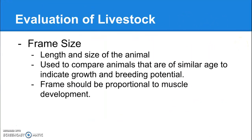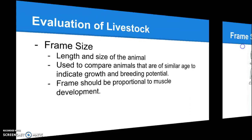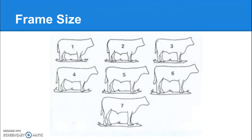Frame size is the length and size of the animal — how big is its skeleton. This is used to compare different animals of similar age and helps indicate growth and breeding potential. You want the frame to be proportional to muscle development; a huge frame with very little muscle means a big skeleton but not much meat. Frame size is scored on a scale of one to seven, from smallest to largest.